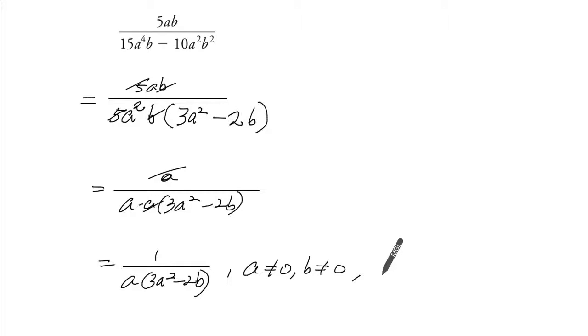And from here, we have 3A squared minus 2B cannot be 0. Or we can say 2B cannot be 3A squared, or B cannot be 3 over 2.